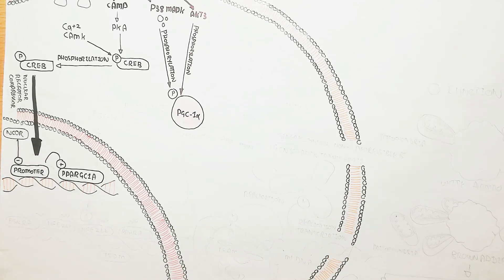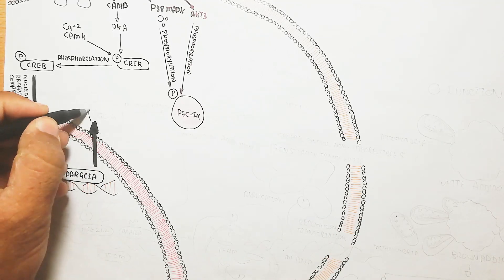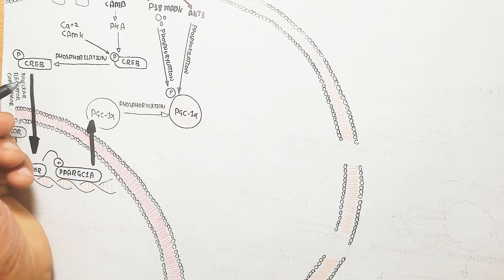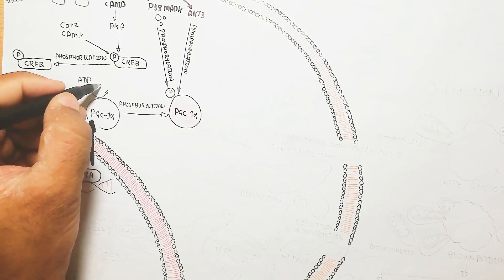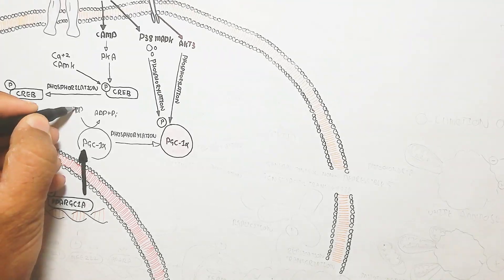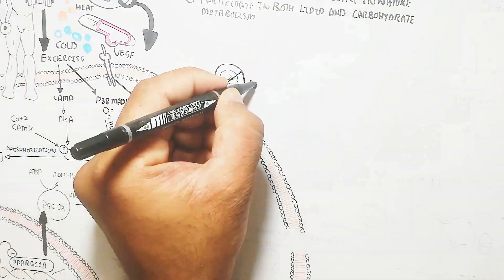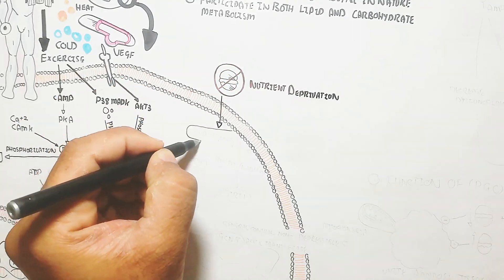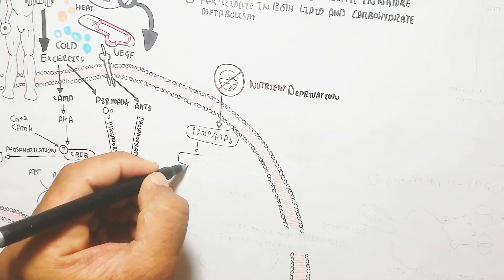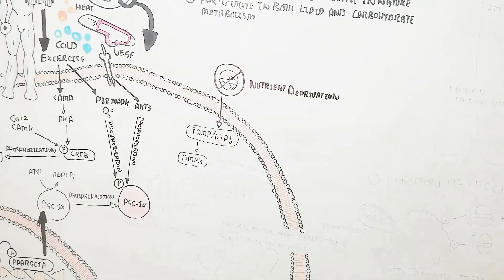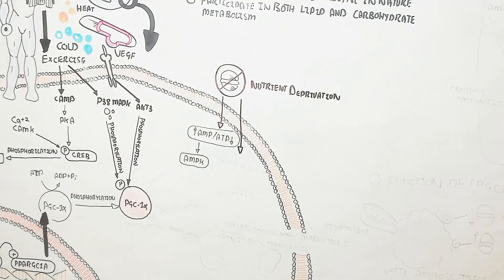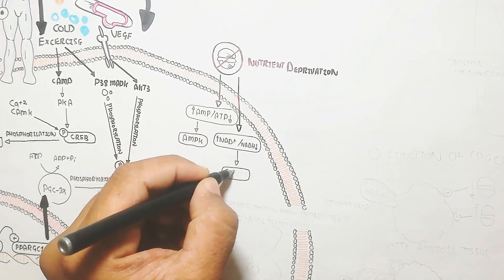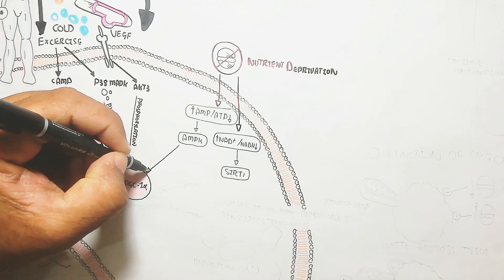The nuclear receptor co-repressor (NCR) inhibits the promoter, but the phosphorylated CREB protein activates the promoter, leading to expression of the PPARGC1A gene, which is responsible for the production of PGC1-alpha. This phosphorylation requires phosphate groups through ATP. Additionally, nutrient deprivation — when the cell is energy-starved — causes ATP to decrease, activating AMPK due to increased AMP.